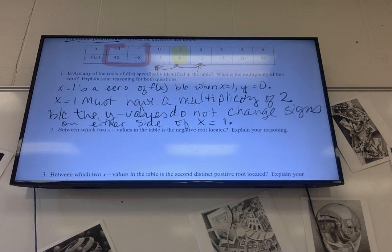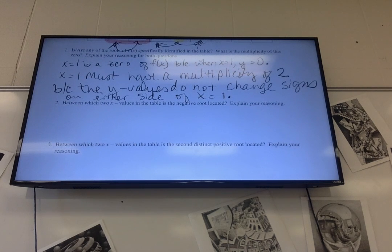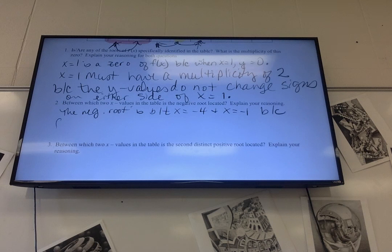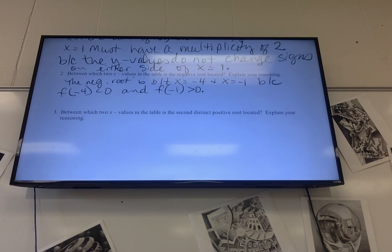Why? How do you know that, Tyler? Because the sign of f of x changes. Yeah. That's a guarantee. Remember, if the sign changes, there has to be a zero there. So the negative root is between x equals negative four and x equals negative one because f of negative four is negative and f of negative one is positive.